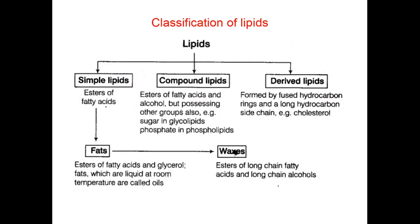Classification of lipids. Lipids are classified into three groups: simple lipids, compound lipids and derived lipids. Simple lipids are called fats. These are esters of fatty acids and glycerol which are liquid at room temperature, then we call them oils. Esters of long chain fatty acids and long chain alcohols are also called waxes. Compound lipids are esters of fatty acids and alcohol but possess other groups also. For example, sugar in glycolipids, phosphate in phospholipids. Derived lipids are formed by fused hydrocarbon rings and a long hydrocarbon side chain. For example, cholesterol.